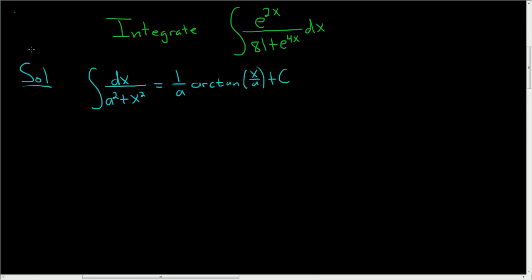So we want to rewrite our indefinite integral in a way that lets us use this formula. We have e to the 2x over, and we can write 81 as 9 squared. That takes care of the a squared part, plus, and we can write e to the 4x as e to the 2x quantity squared, dx.